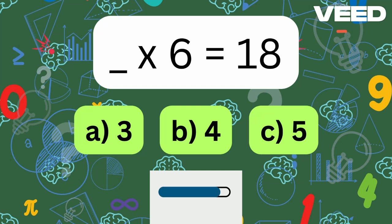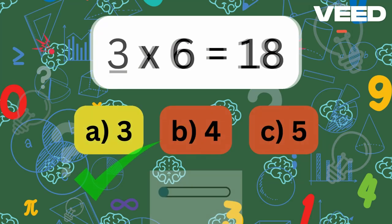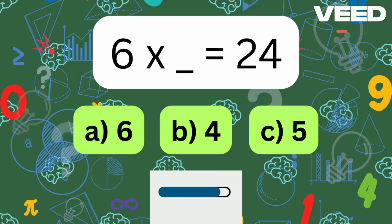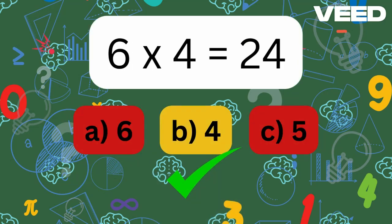What times 6 is equal to 18? 3x6 is equal to 18. 6x what equals 24? 6x4 is equal to 24.